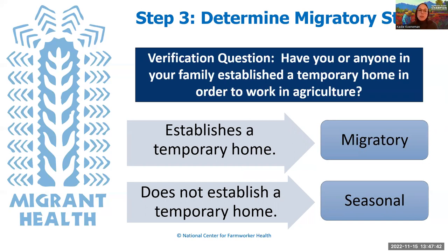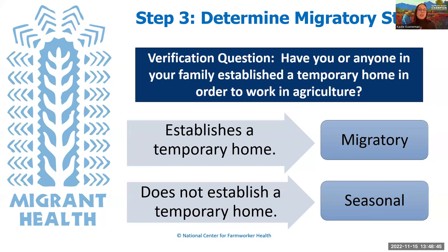Step three is to determine migratory or seasonal status. For migratory status, the verification question is: 'Have you or anyone in your family established a temporary home in order to work in agriculture?' Migratory patients have had to establish a temporary home in order to work. One important point: housing determines status, not the distance — there is no mileage or hours traveled requirement. For example, someone could live in central Texas and work in the Rio Grande Valley without being able to return home at night, establishing a temporary home, without ever crossing a state border.